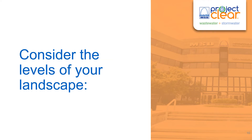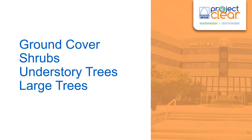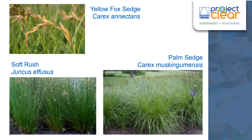Going from an overhead view to a more profile view — don't just think about looking down at your plan, but what it's going to look like from the ground level. Consider the different levels of your landscape: we're not just talking about ground cover, but also shrubs or bushes, smaller understory trees, and your large trees as well. We're not going to go into great detail about all the plants, but just to give you some motivation and inspiration to get you started on the path toward native plants.